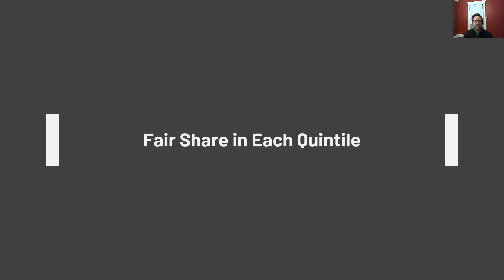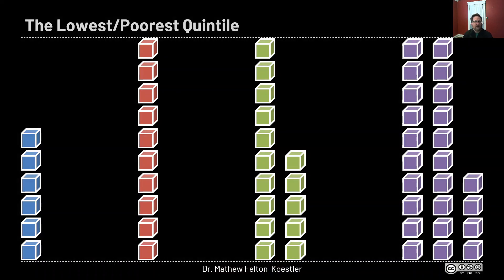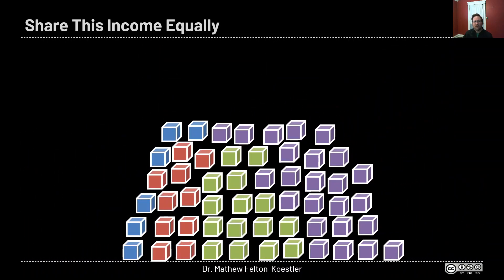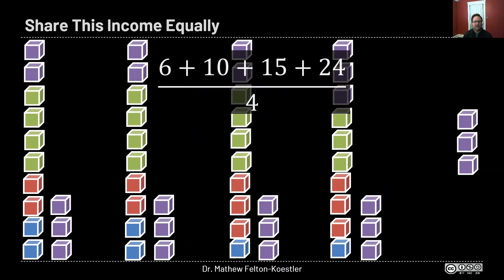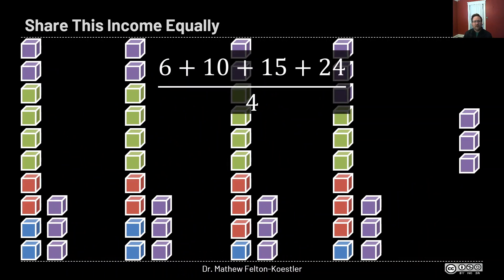One of the questions we looked at is: what would it mean for the group to share their money equally? The poorest quintile had households making six thousand, ten thousand, fifteen thousand, and twenty-four thousand dollars. If we share this income equally among the four households, we can imagine putting all the blocks together in one big pile and then dealing them out — that's six plus ten plus fifteen plus twenty-four, divided among the four groups.